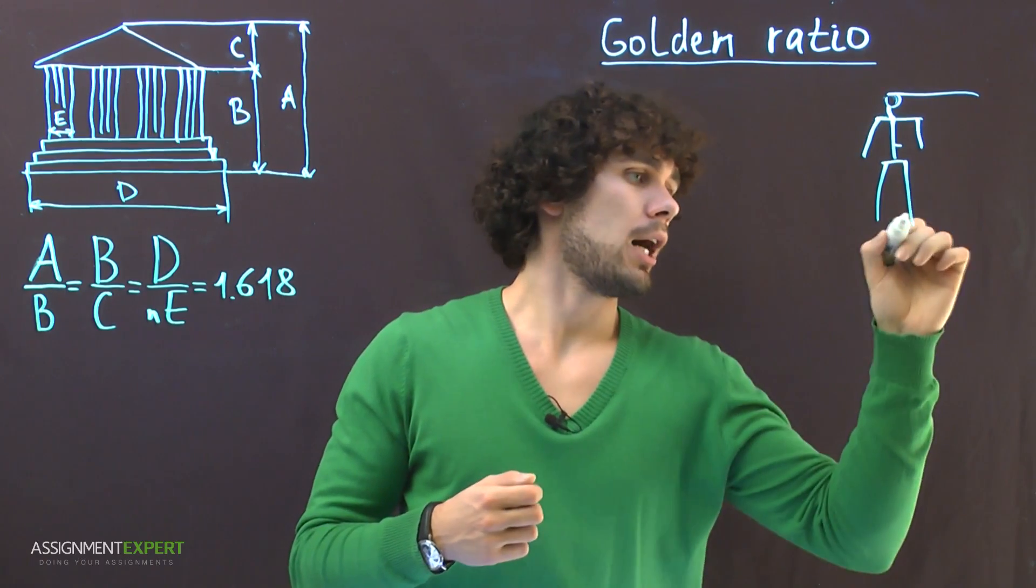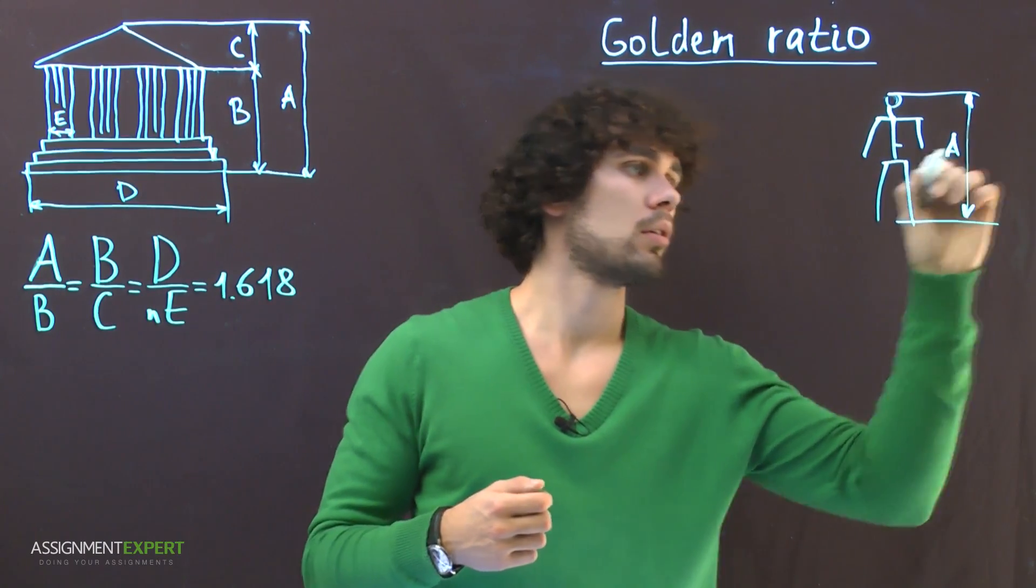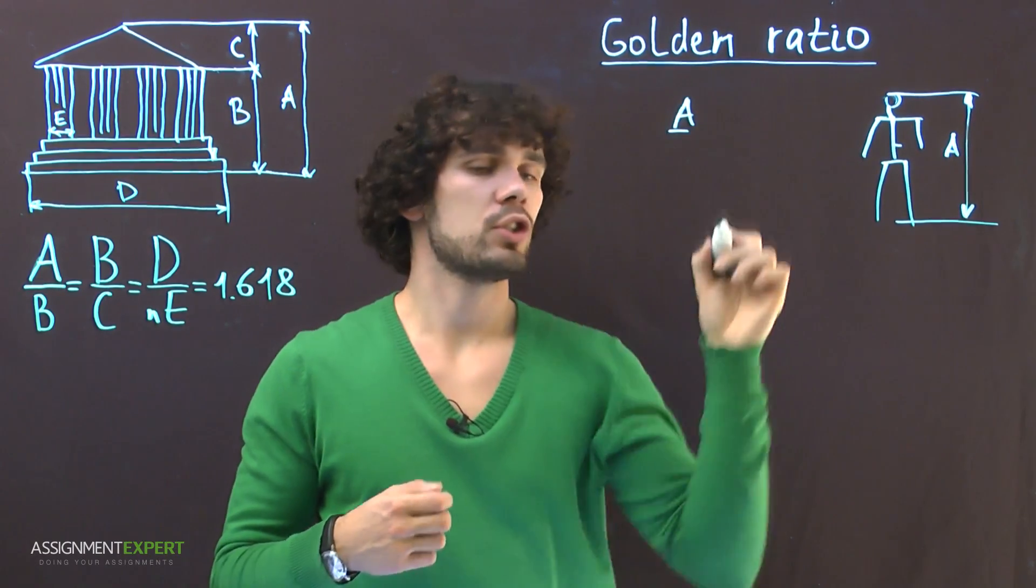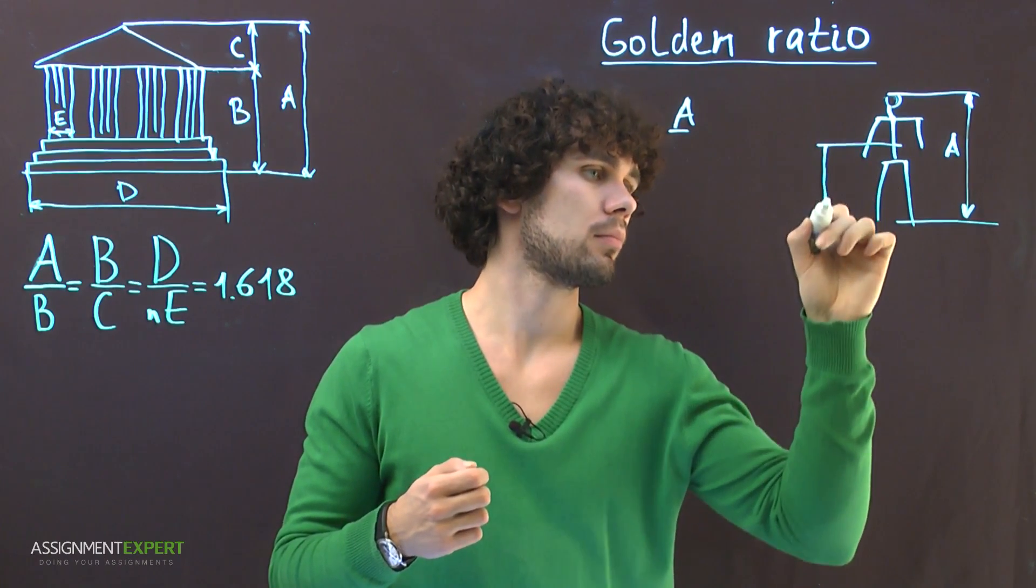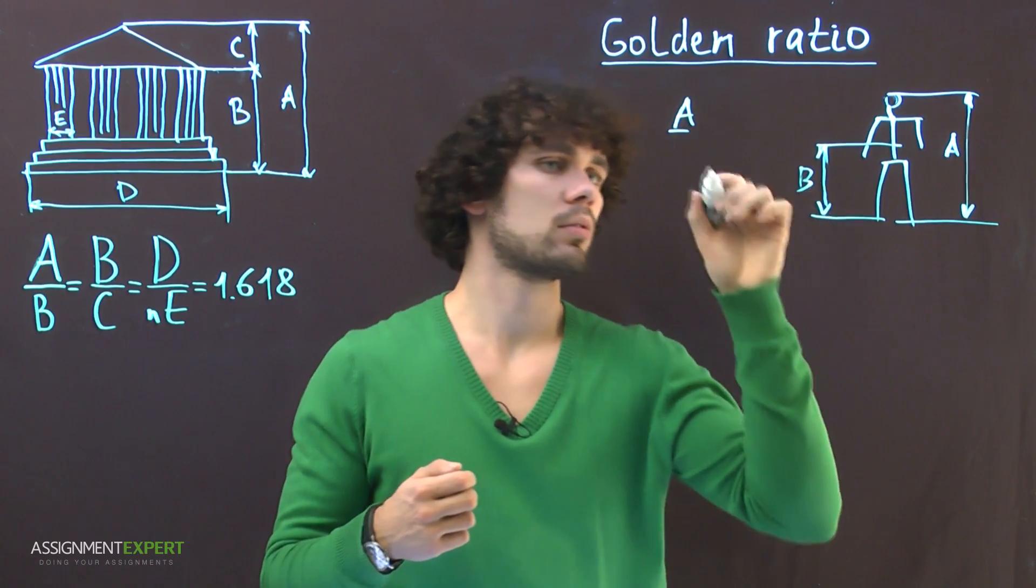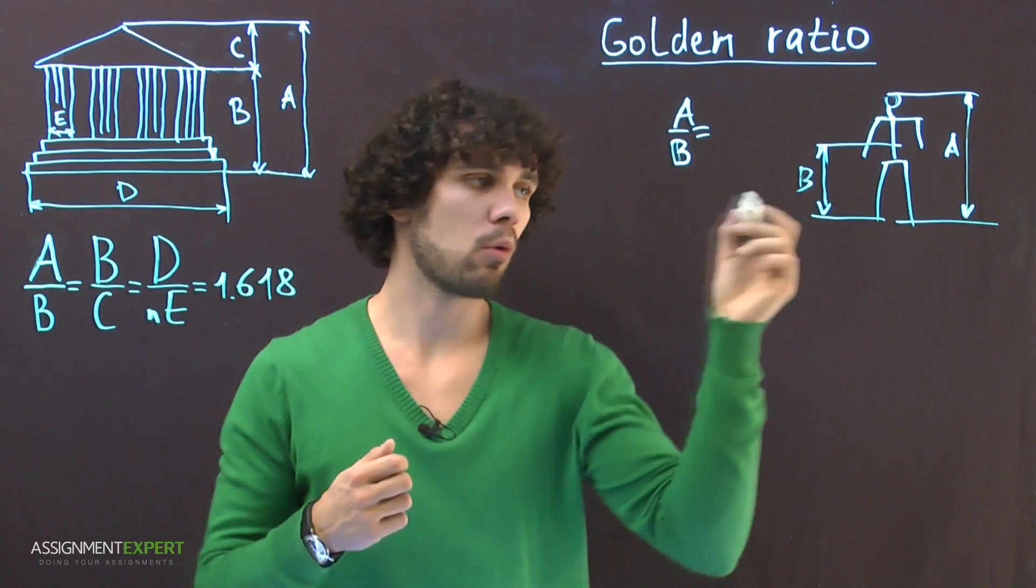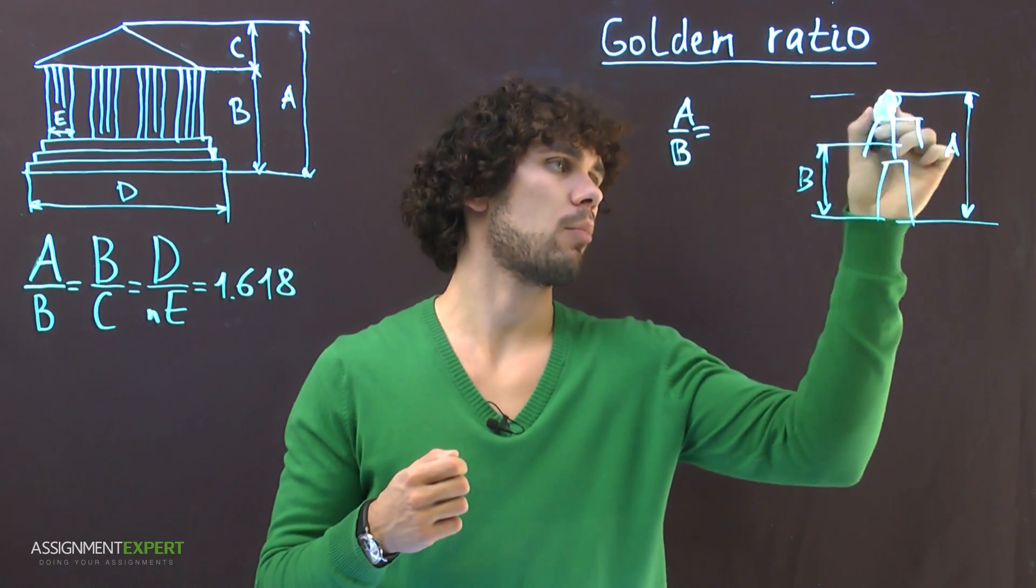So the height of a human being, A, refers to the height of his lower part, B, in the same way as the lower part, B, refers to the upper part, C.